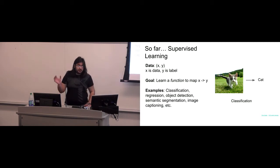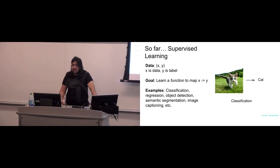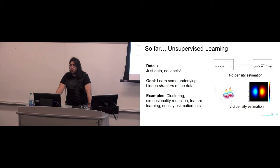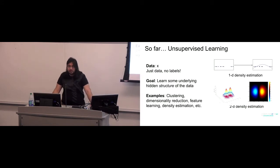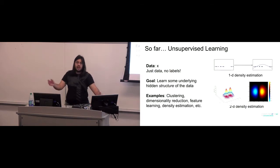In supervised learning, it's important to note that you have a supervisor, usually a human, that labels or annotates your data points, and the objective is to approximate a function that best maps from input data points to the label. You've also learned about unsupervised learning, where you only have data points without any labels, and the goal is to learn some underlying hidden structure of the data. Examples of unsupervised learning are clustering algorithms like k-means clustering, dimensionality reduction, feature learning, density estimation, and so on.